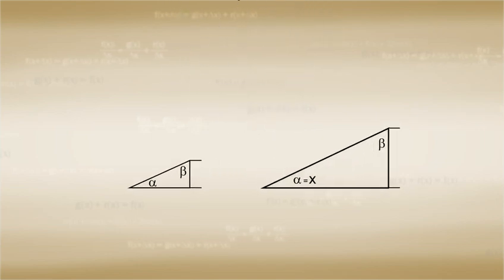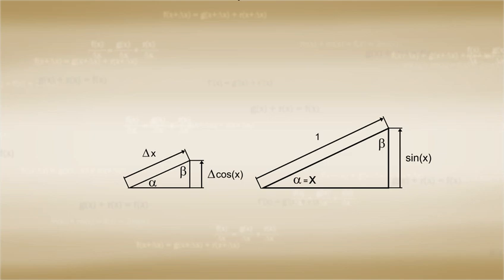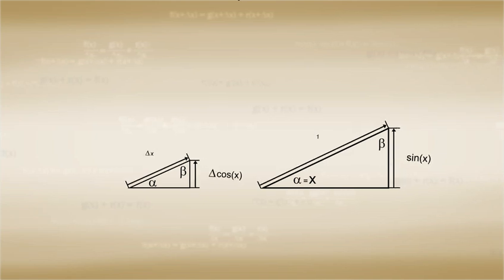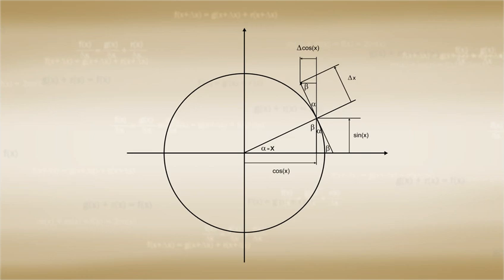Notice that the delta cosine x is related to the sine of x just as in the previous example, delta sine of x was related to the cosine x. Something interesting remains to be noticed, however.